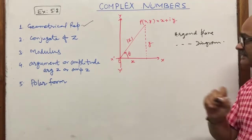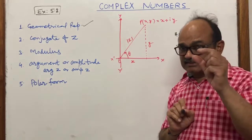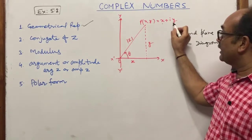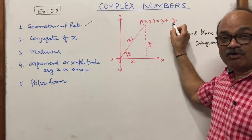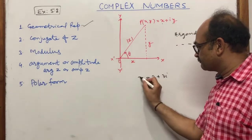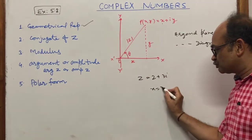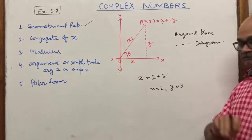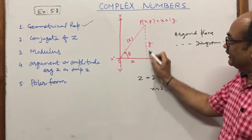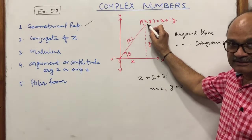For a complex number x plus iota y, x is the abscissa (real part) and y, the imaginary part, is the ordinate. For example, the complex number 2 plus 3 iota: x-coordinate is 2 and y-coordinate is 3, so we plot the point (2, 3) on the Argand plane.